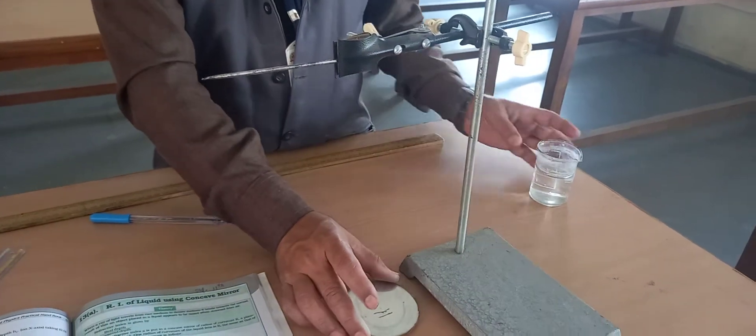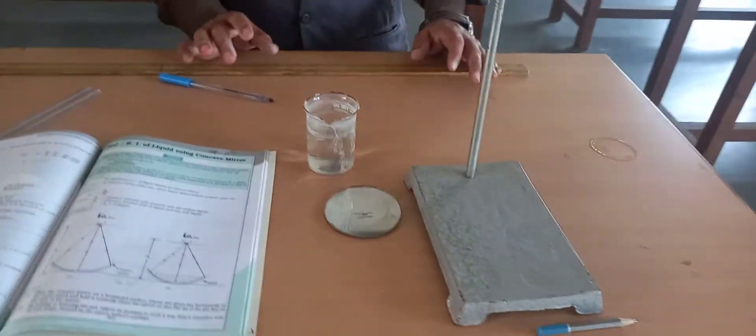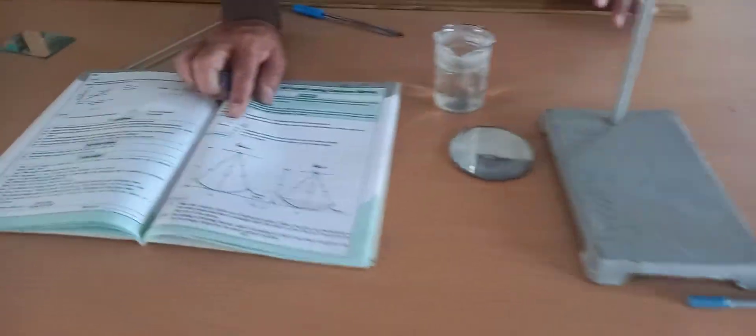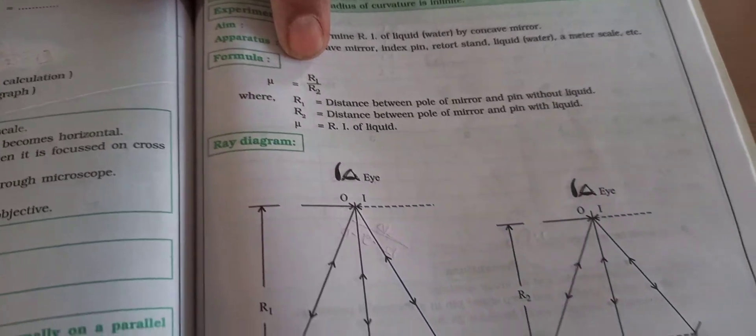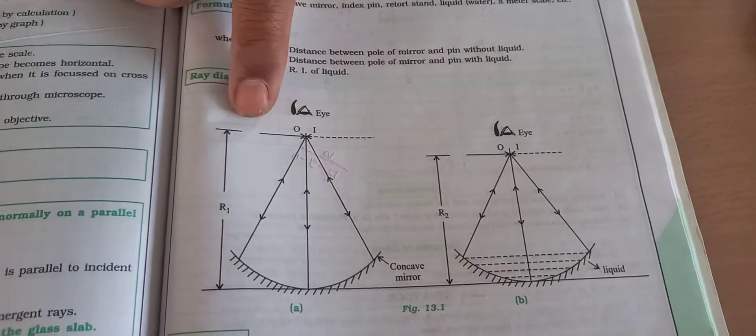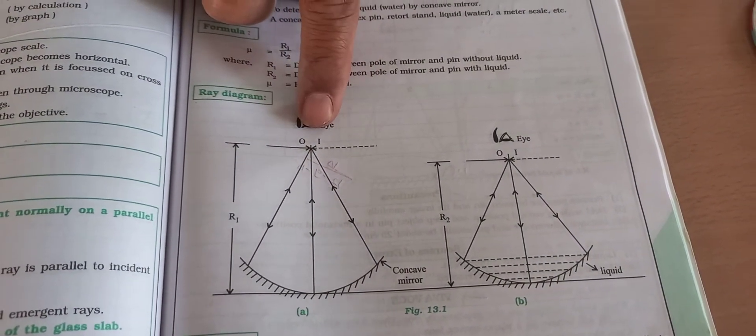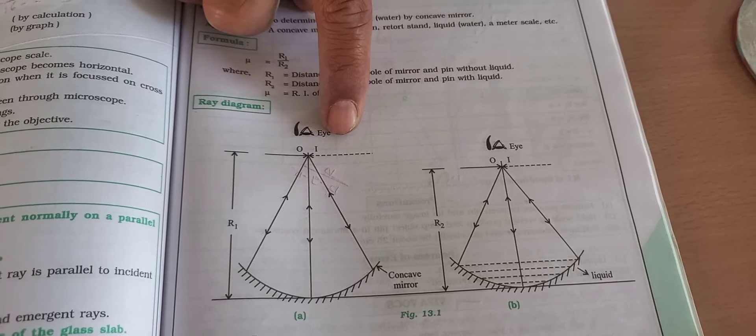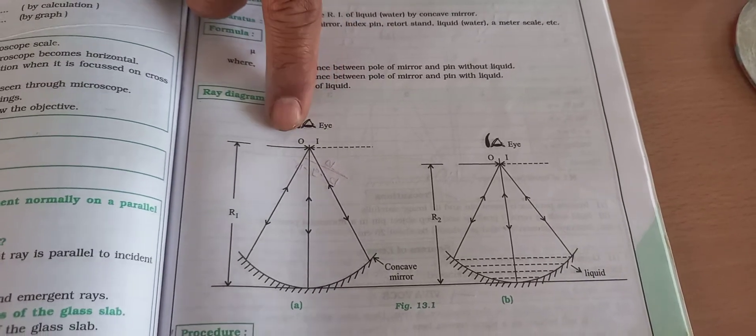The formula is μ = r1/r2. What is r1? In this diagram, there is an object O and we have to adjust the image such that we get a sharp image which is exactly opposite to the object. The distance between the object and horizontal surface without liquid is called r1.